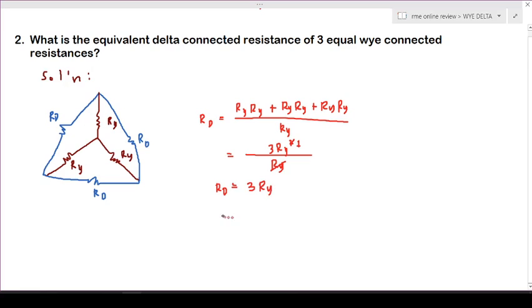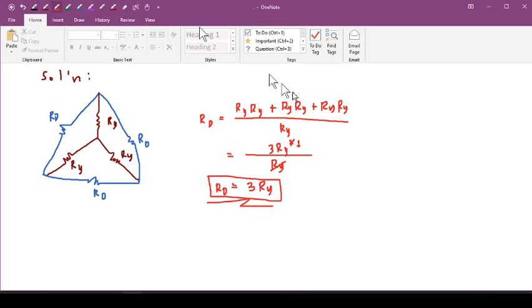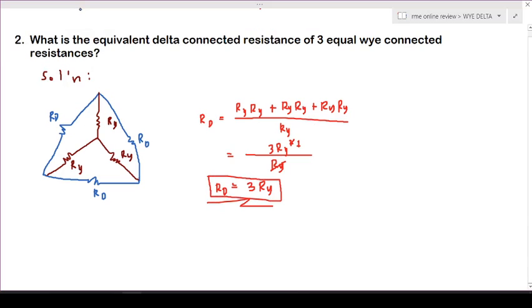And this is now your answer. So what does it mean? It means that your delta resistance is three times of the wye resistance if those resistances are equal. So from this we could also say that Ry...